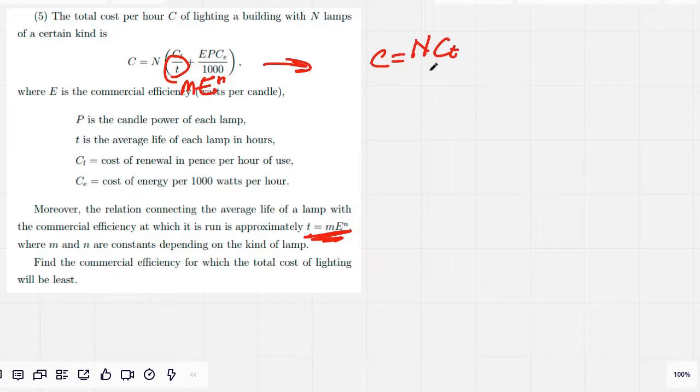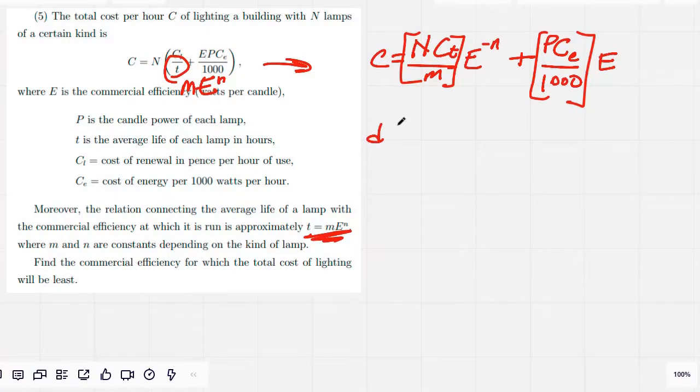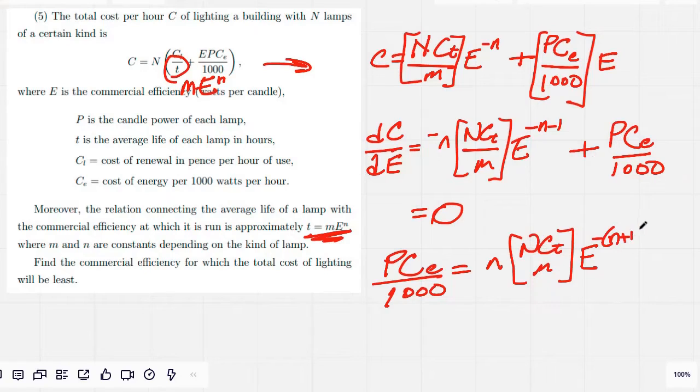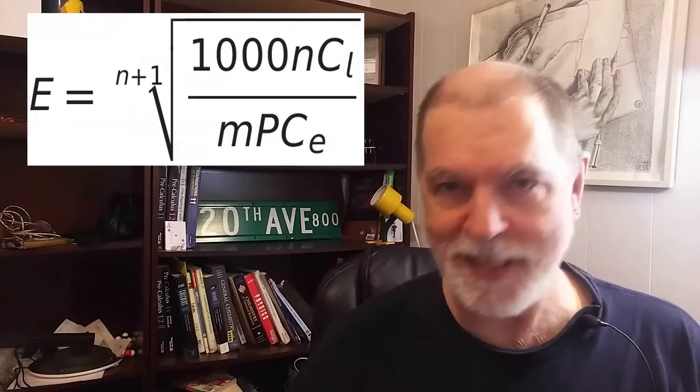And now we're going to differentiate C with respect to E. We find that the first derivative is zero when E is equal to this thing.